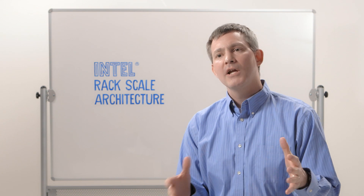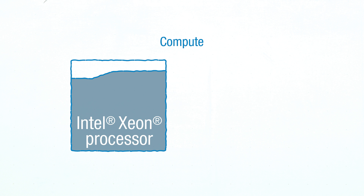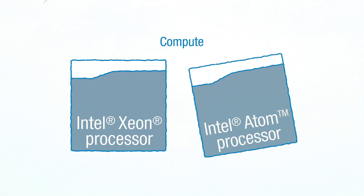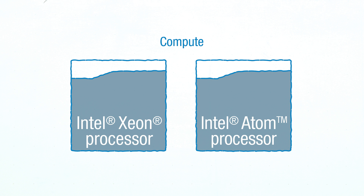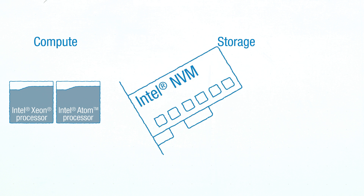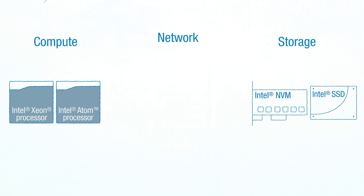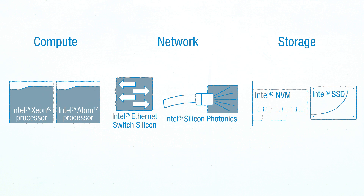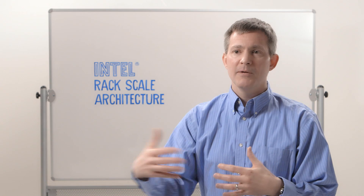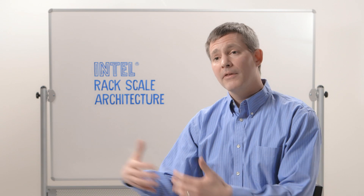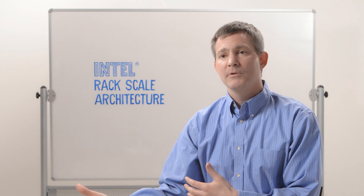Intel is delivering a range of products and technologies across the entire rack to make this possible. On the compute side, we have the Intel Xeon Server CPUs and the Intel Atom CPUs. On storage, we're delivering Intel's NVM and Intel's SSDs. And on the network side, we have Intel's Ethernet Switched Silicon and Intel's Silicon Photonics Interconnect. We're also releasing the RSA Developers Kit to enable our ecosystem partners to develop their products that implement these capabilities.